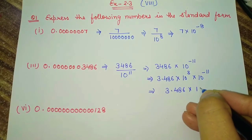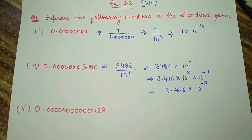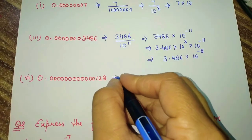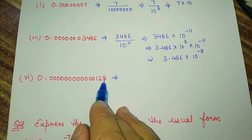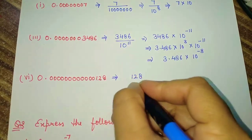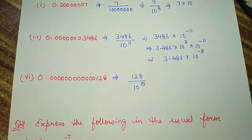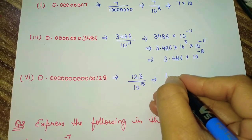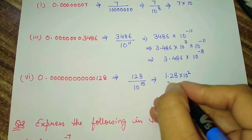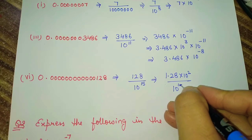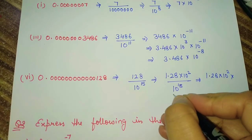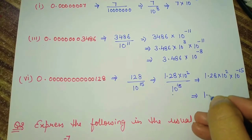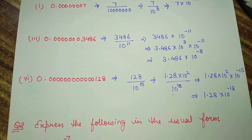We can write 10 raised to the power minus 8. Now for the sixth part, they have given a number with 1 followed by zeros — after 15 digits: 1, 2, 3, 4, 5, 6, 7, 8, 9, 10, 11, 12, 13, 14, 15. So we write 10 raised to the power 15. Converting 128 into standard form gives 1.28 × 10 to the power 2. Combined with 10 to the power minus 15, we write 1.28 × 10 raised to the power minus 13.